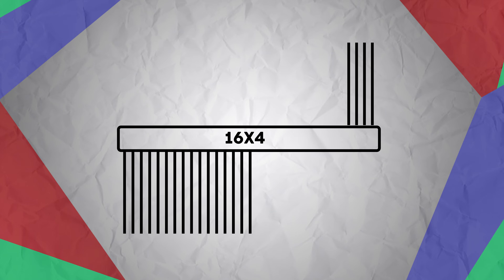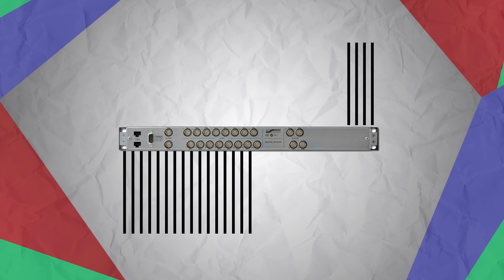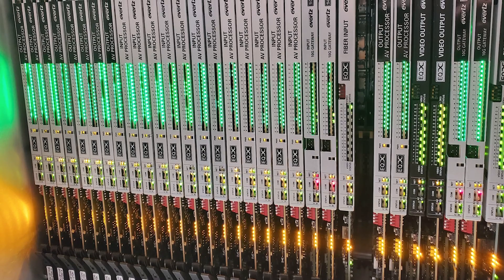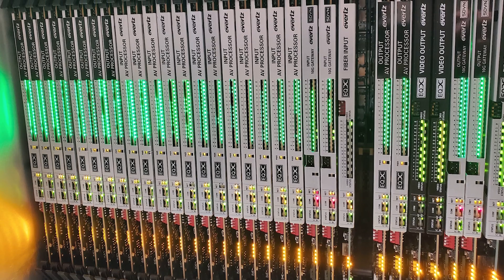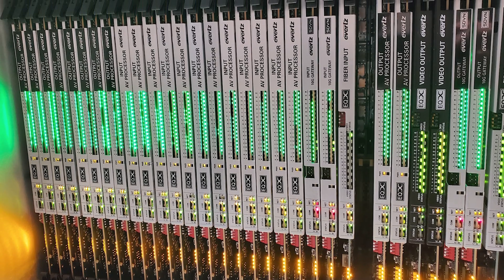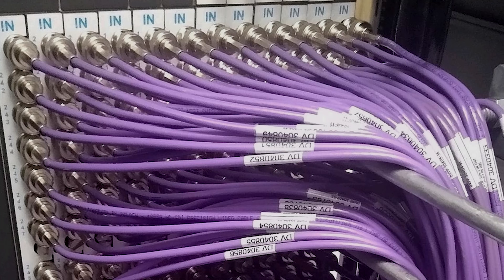Some basic routers are designed to have their I/O — inputs and outputs — unexpandable, meaning they will only ever have a set number of inputs and outputs. Scalable routers, in contrast, are designed with more room to grow, as they have modular input and output cards that can be purchased and added to the system later to accommodate more sources or destinations down the line. That's where you might see a router advertised as up to X number of ins and outs. I've seen some routers go as high as 1152 by 1152.